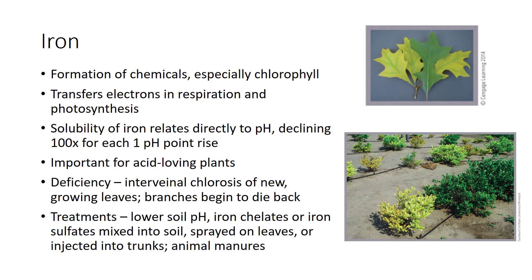Iron, the trace element used in the greatest amount by plants, is part of many enzymes necessary in the formation of a number of chemicals, especially chlorophyll. Iron compounds also transfer electrons during many of the reactions involved in respiration and photosynthesis. The solubility of iron compounds relates directly to pH, declining about 100 times for each rise of one pH point. Acid-loving plants suffer iron shortages when pH rises above 5.0 or 6.0, while many plants become deficient at higher pH.